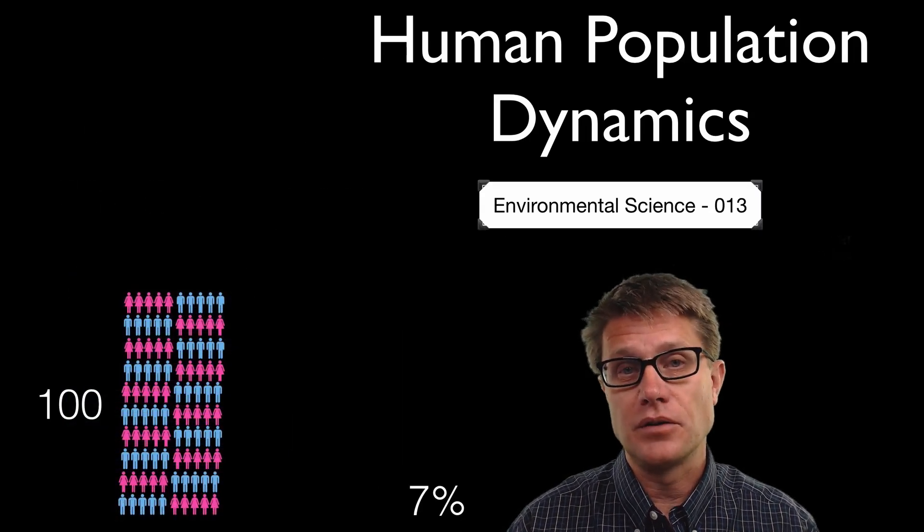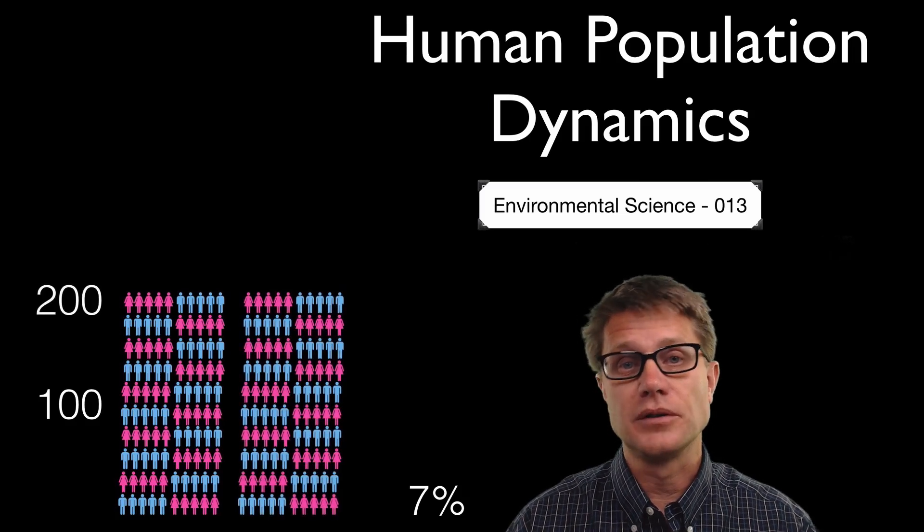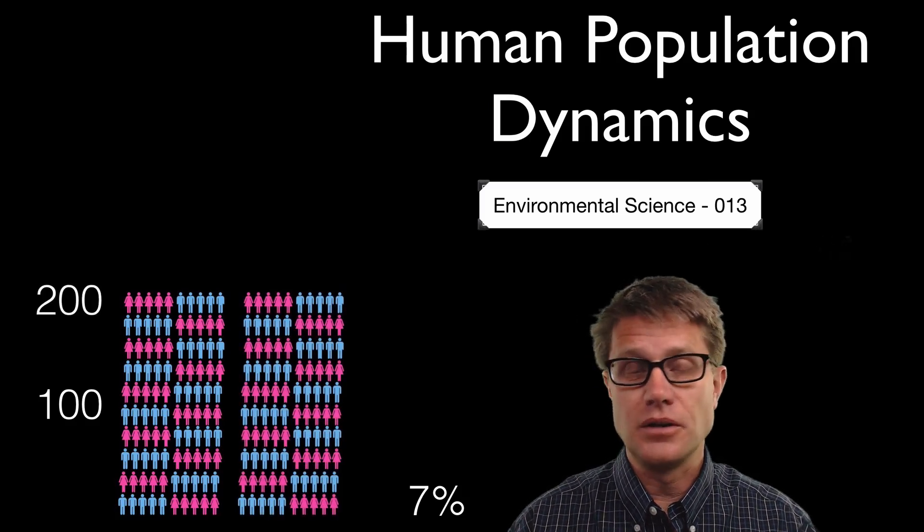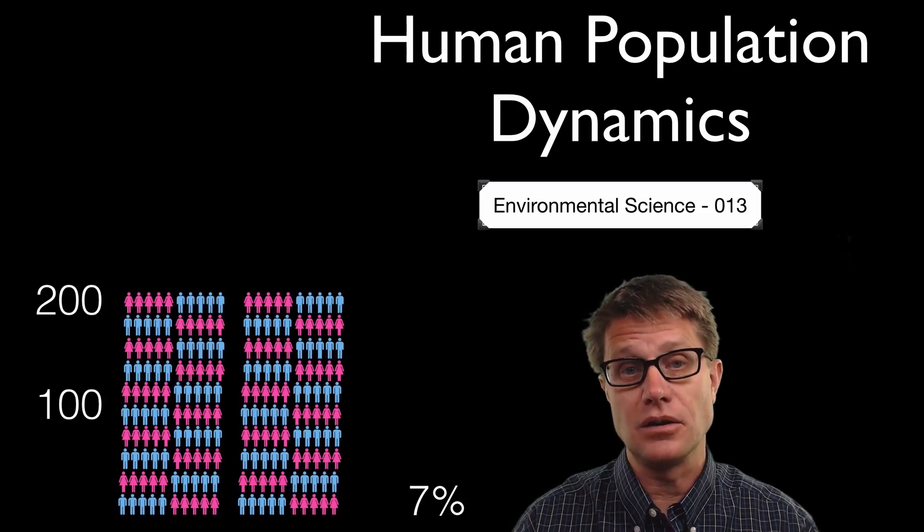Let us say we have a population of 100 individuals, a growth rate of 7%. How long is it going to take that population to double to 200 in size? All you do is take 70 divided by that growth rate, 70 divided by 7, gives you 10 years.